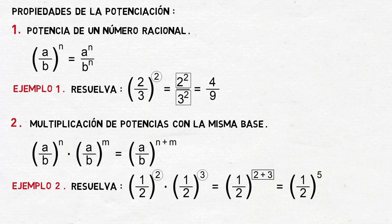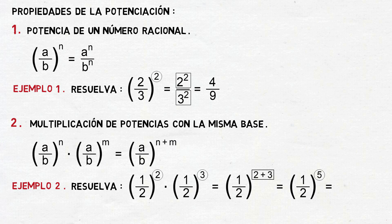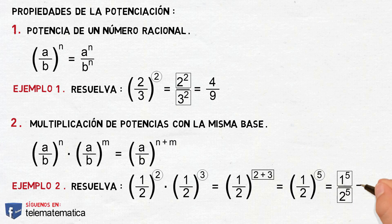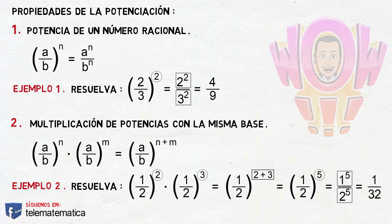Aplicando la propiedad de potencia de un número racional, esto nos quedaría igual a 1 elevado a la quinta, dividido para 2 elevado a la quinta. Resolviendo ambas potencias, esto va a ser igual a 1 treinta y dos avos.